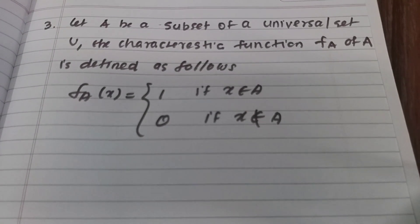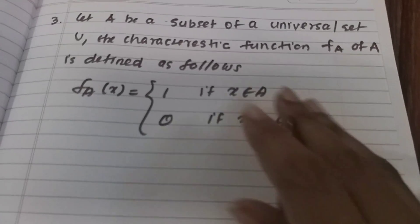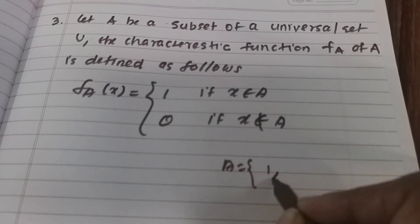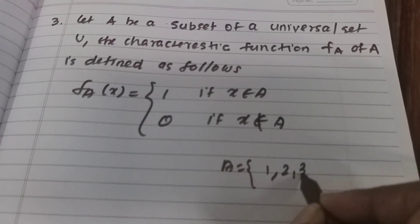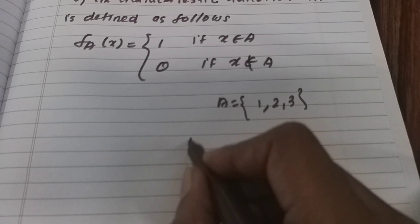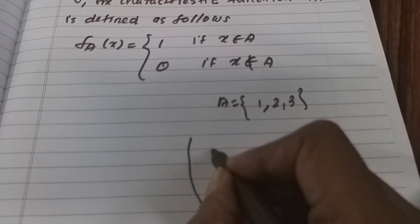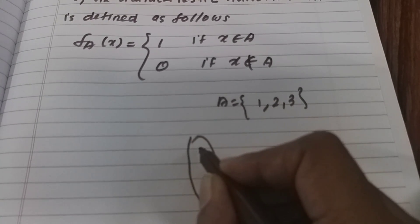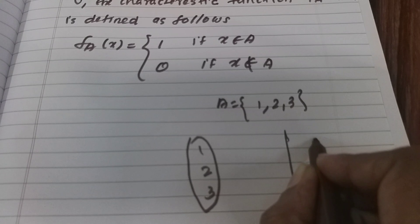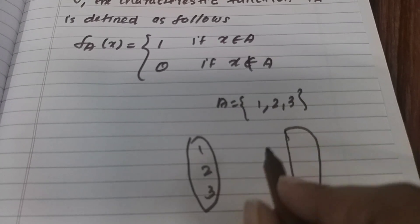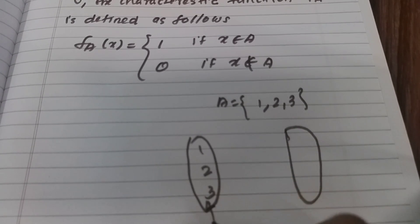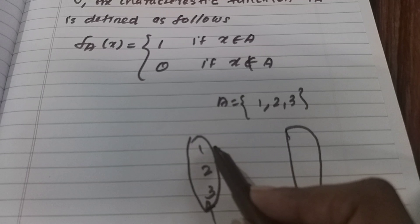For example, let Set A equal {1, 2, 3}. We have a mapping here. The elements 1, 2, 3 are mapped. There is also element 4, which is not an element of A, so its characteristic function value is 0.